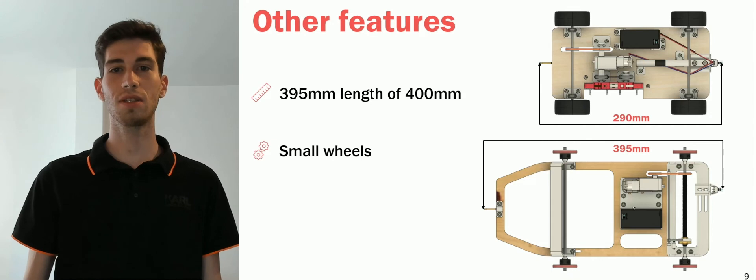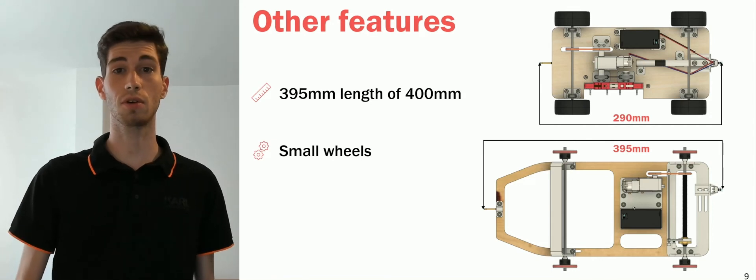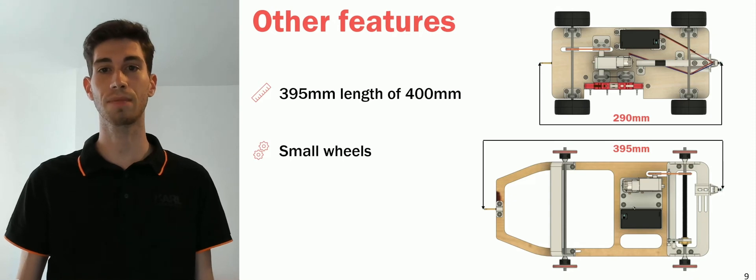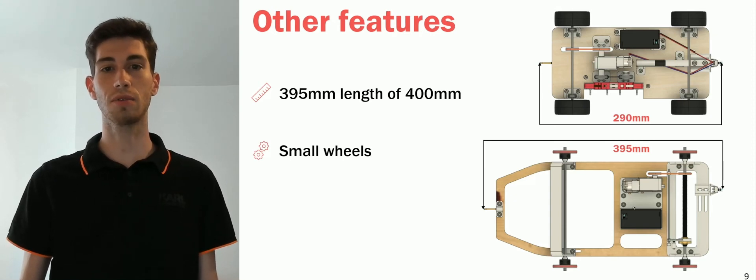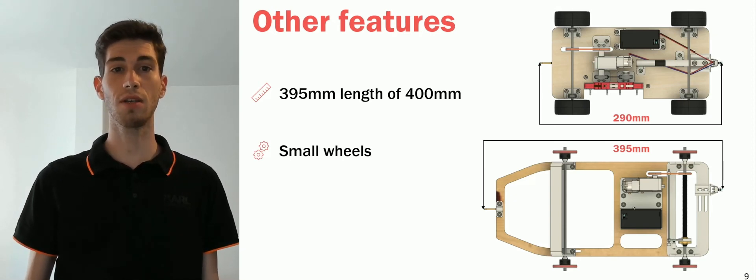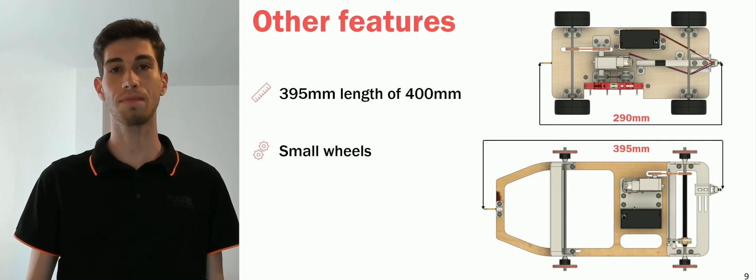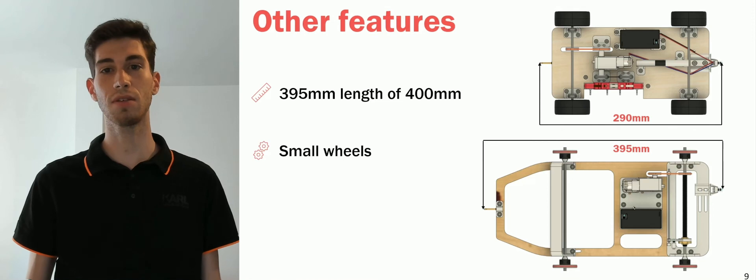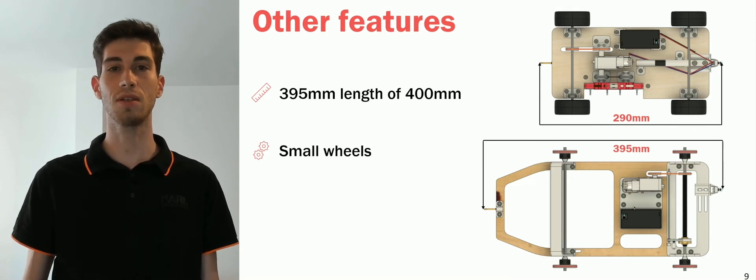Using smaller wheels means the axle must go through more revolutions, causing the lead nut to travel further for the same distance moved by the vehicle. The further the lead nut travels, the smaller the error caused by any deviation in the final position of the nut. Decreasing the size of our wheels from 80mm to 50mm has led us to an increase in accuracy of 38%.